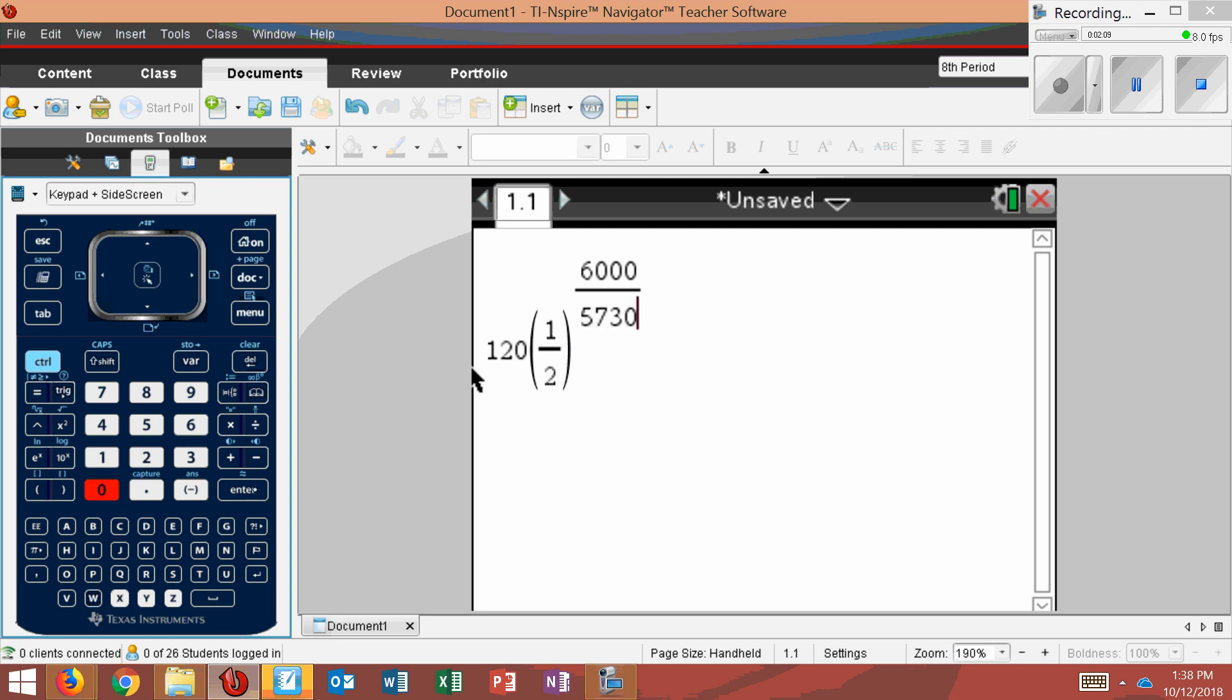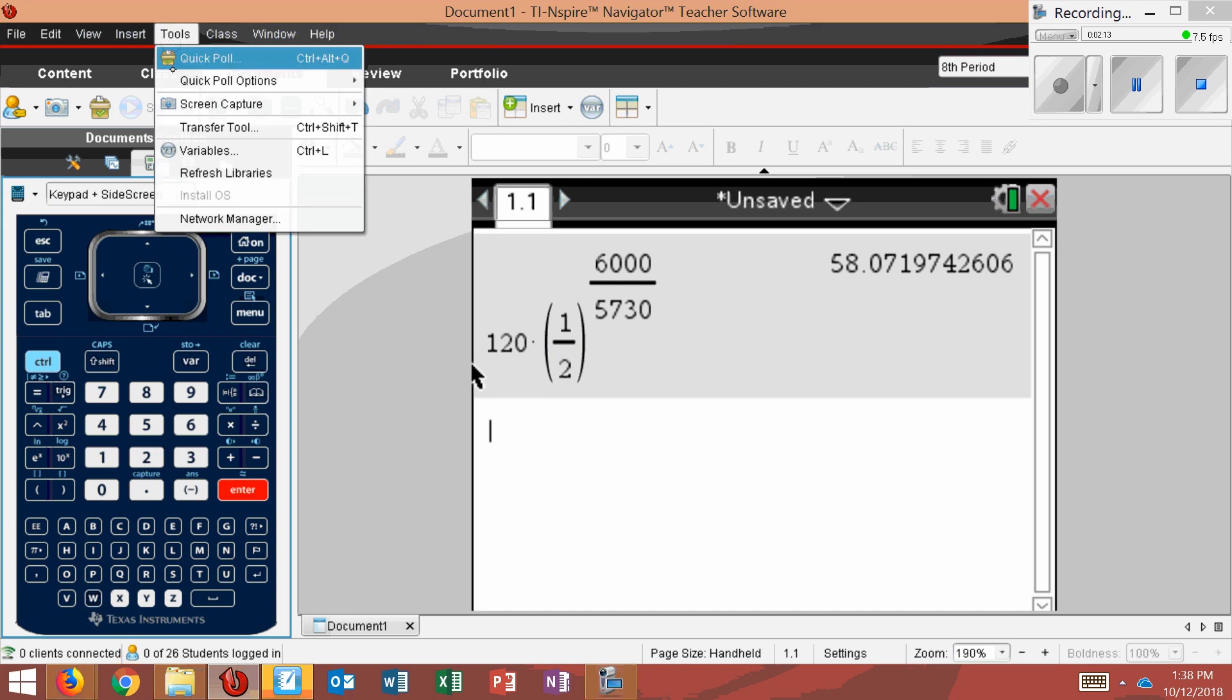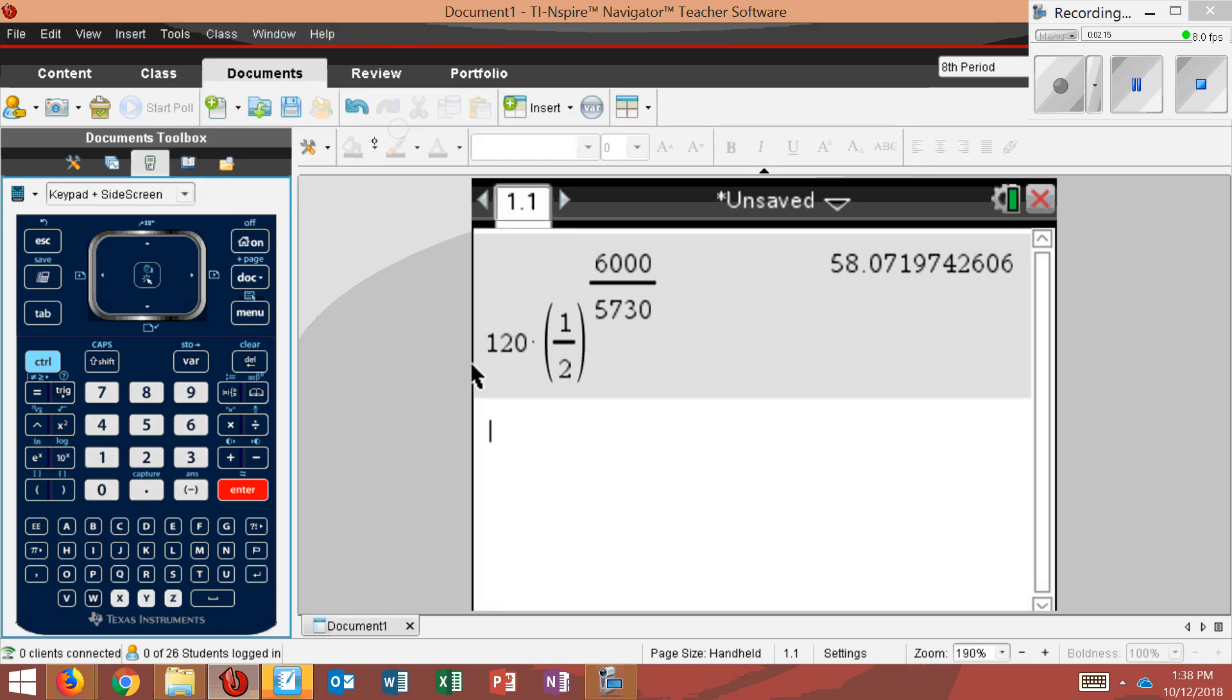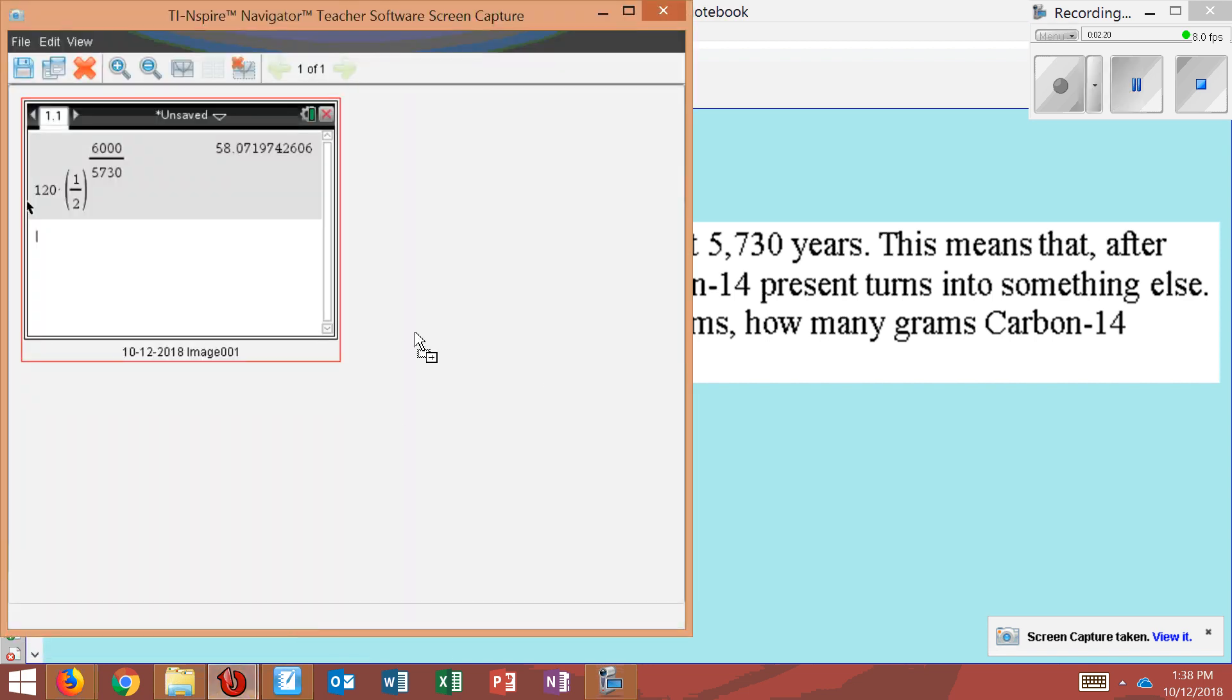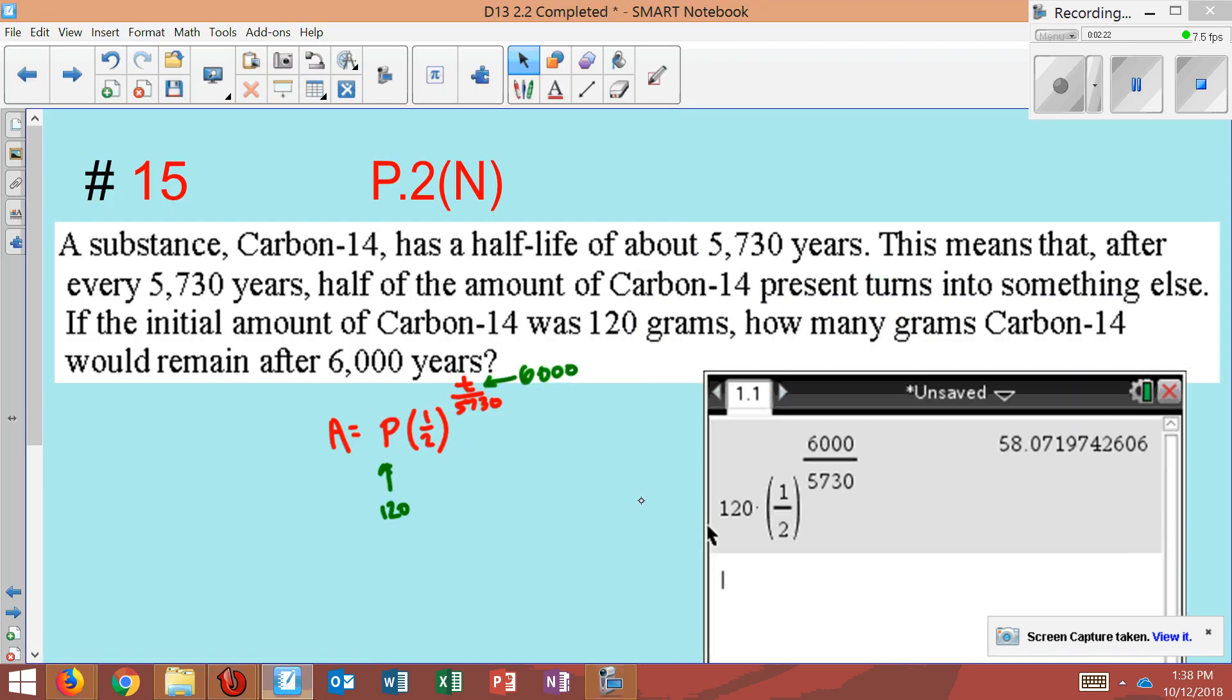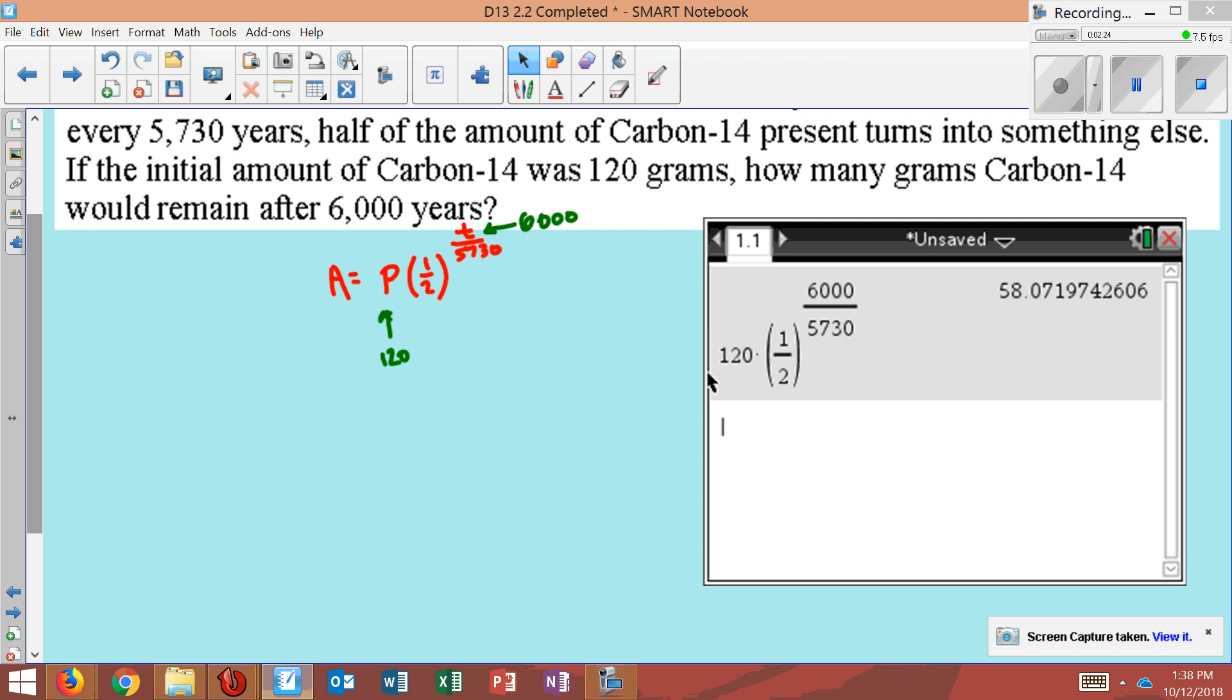And so this should tell me something a little bit lower than 60, and it says 58. So this would be about 58 grams if you rounded. It doesn't say anything about rounding here, so I'll round to the nearest tenth. I'll actually say about 58.1 grams. That's how much would be left over.